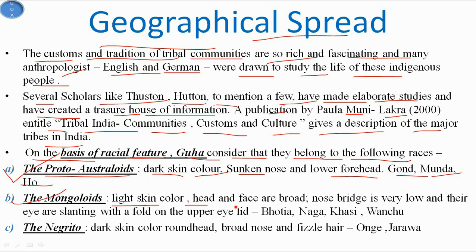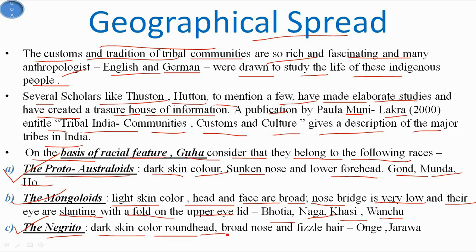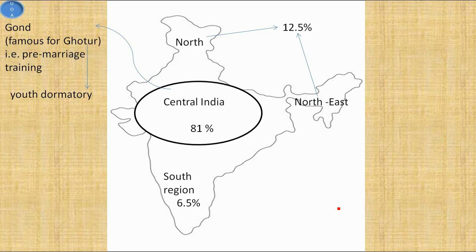Another group is the Mongolites, who have light skin color, broad head and face, very low nose bridge, and slanting eyes with a fold on the upper eyelid. Examples are Bhutia, Naga, Khasi, and Wenju. The last racial group is the Negrito, who have dark skin color, round head, broad nose, and frizzy hair. Examples are Ong and Jarawa.